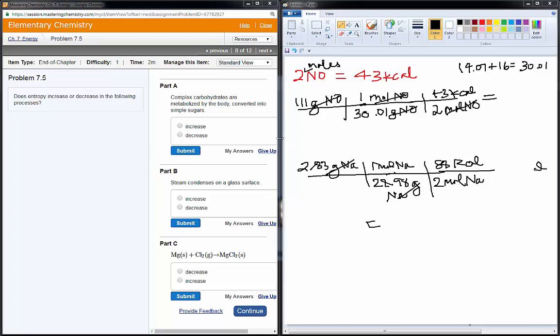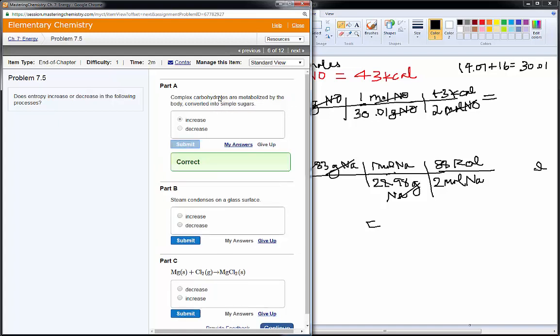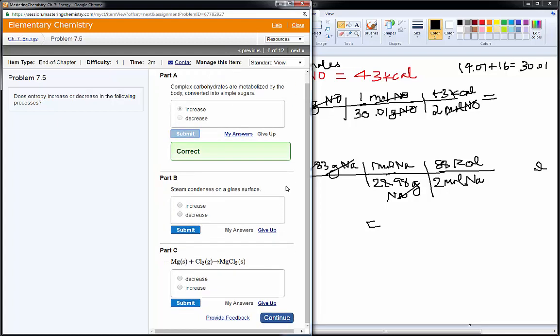Next, we're asked if entropy increases or decreases in the following processes. So, in the first place, if I have complex carbohydrates being converted to simple sugars, hopefully you can see I'm going from something that's more complex to something that's more simple. So, that increases entropy, increases randomness and disorder, because I'm moving from complex things to simple things.